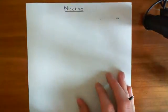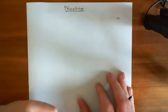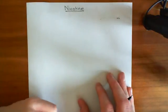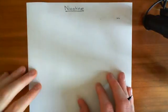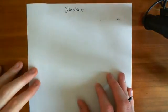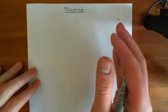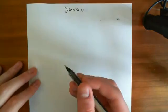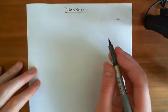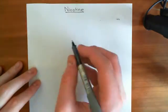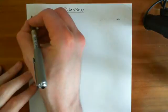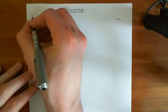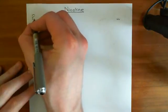Before I can tell you the structure of nicotine, I'm going to firstly tell you the structures of some related compounds — the slightly simpler structures that build up to the structure of nicotine. So we'll start with the structure of a pyridine ring.